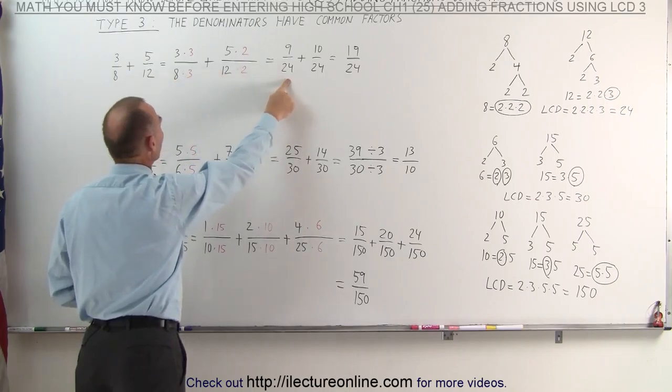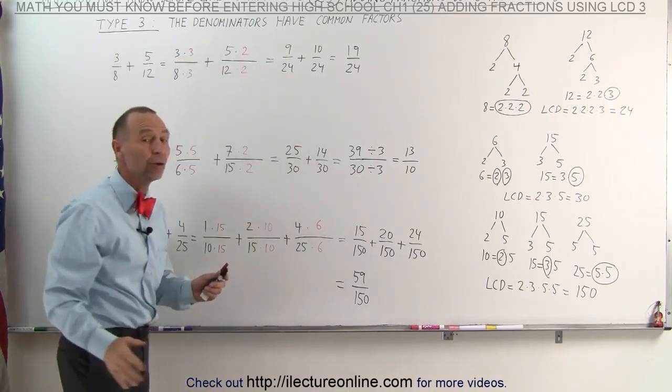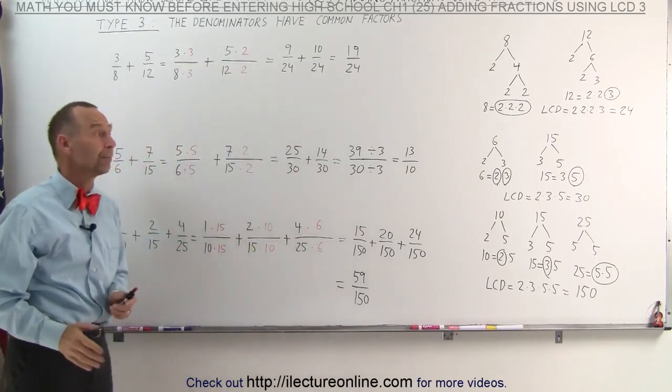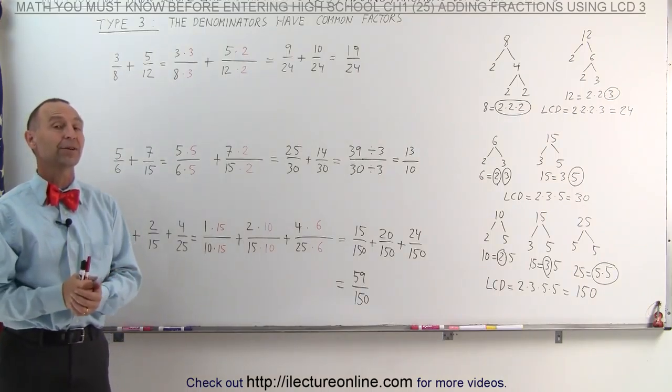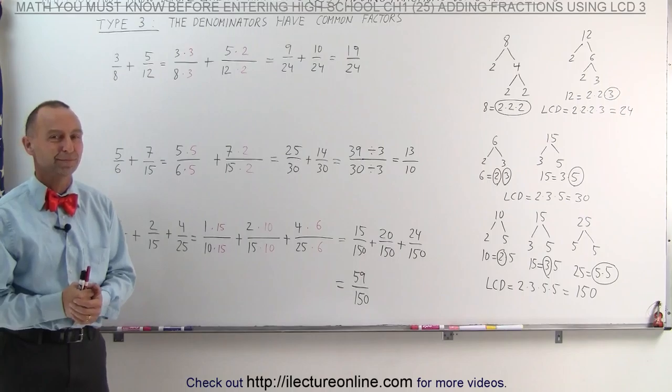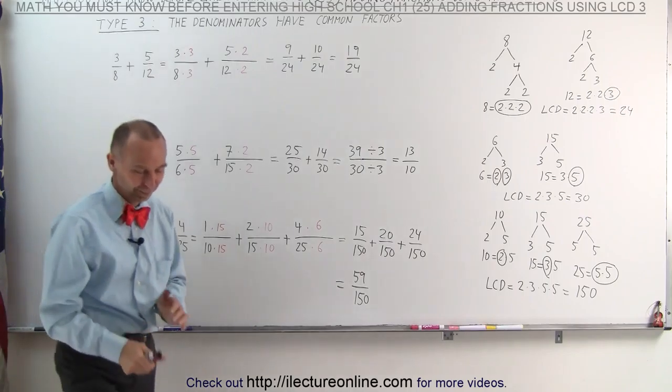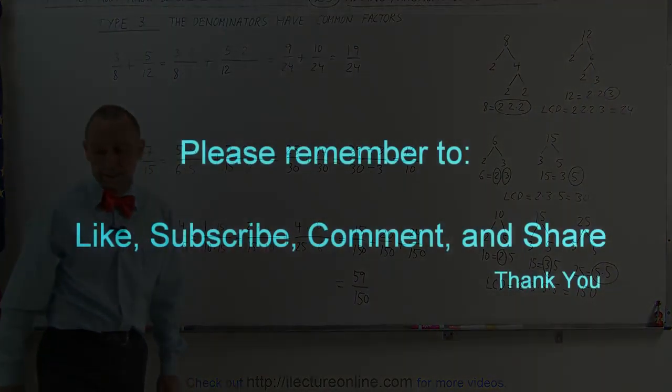Then we come over here, rewrite each fraction, and determine what number we must multiply the denominator by to turn it into the lowest common denominator. Of course, we must multiply the numerator by that exact same number. For example, here the lowest common denominator was 24: 8 times 3 gives 24, so we must also multiply the numerator times 3. And that's the technique we use to add fractions with different denominators.